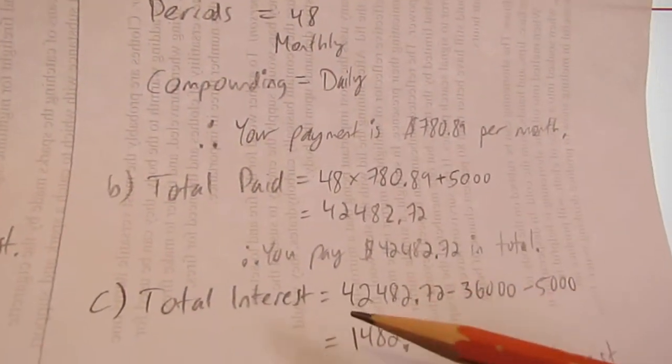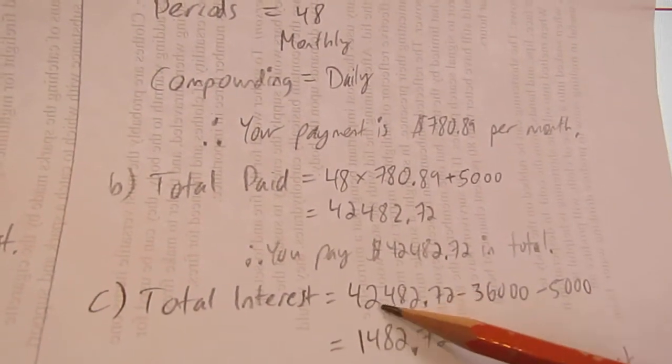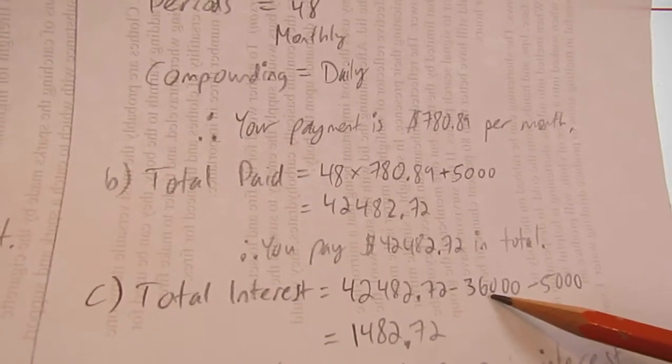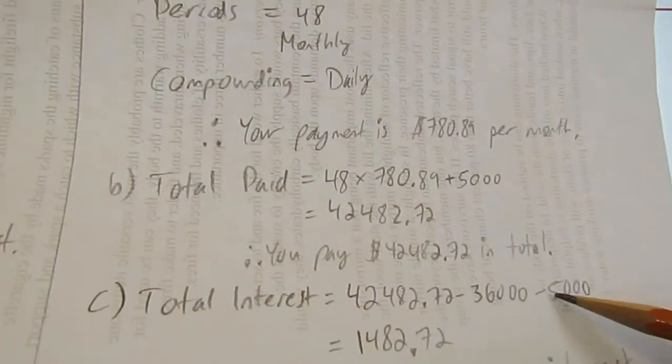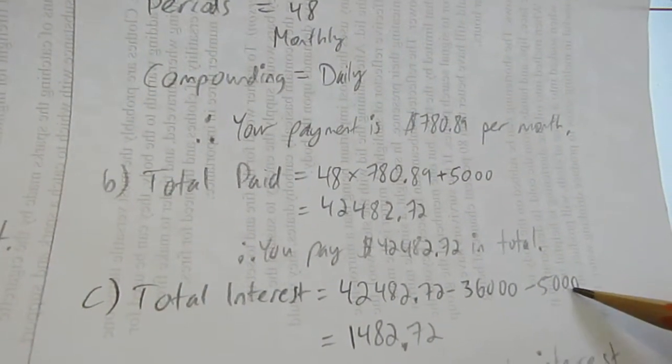So that is, your total interest is how much you spent on this truck total, minus how much you borrowed, minus the down payment, because there's no interest on a down payment. You paid that cash upfront.